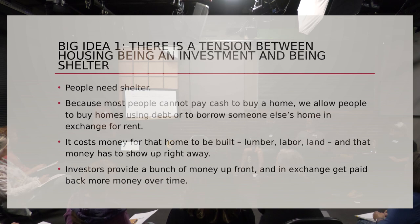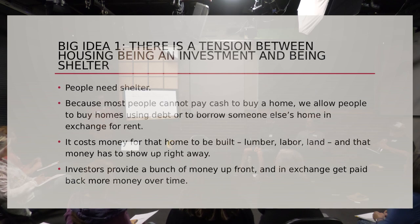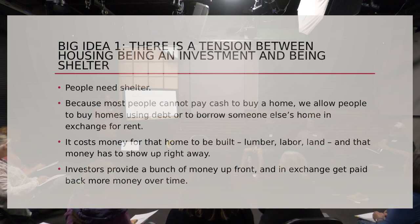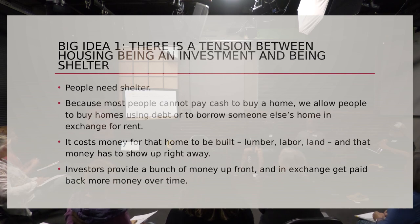Because most people can't afford to pay cash to buy a home, we allow people to buy homes using debt — to borrow someone else's money or borrow someone else's home in exchange for paying rent. But it costs money for that home to be built: lumber, labor, land — and that money has to show up all at once in order for that home to be built. That tension between the fact that most people can't afford a home up front and the need to pay for it over time, whether through a mortgage or rent, that is the root of the financialization of housing. That is what creates the mortgage, debt structures, and the need to package and repackage those mortgages.